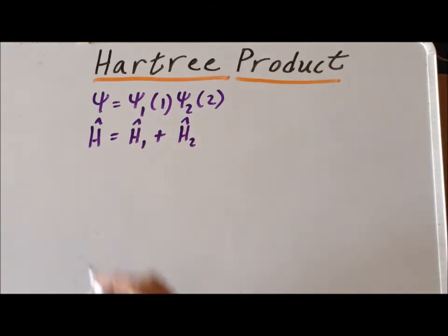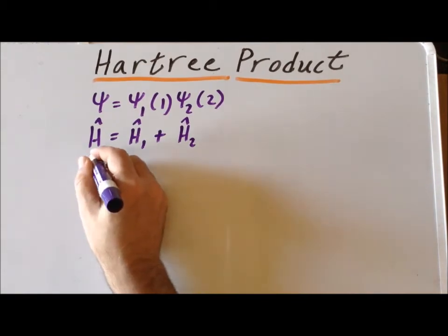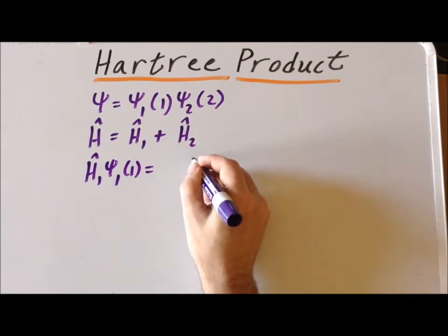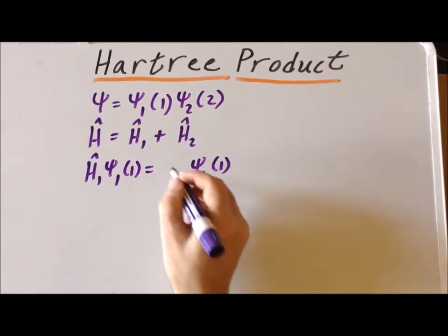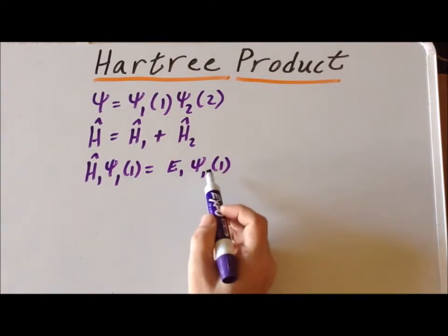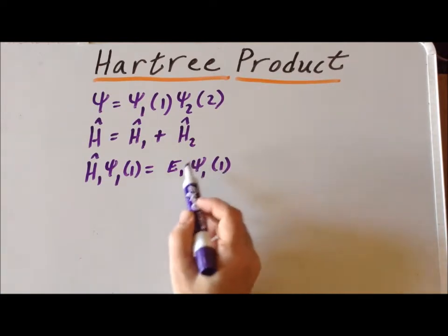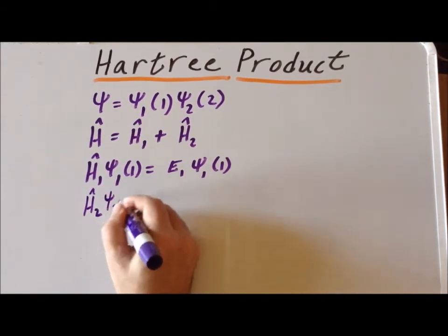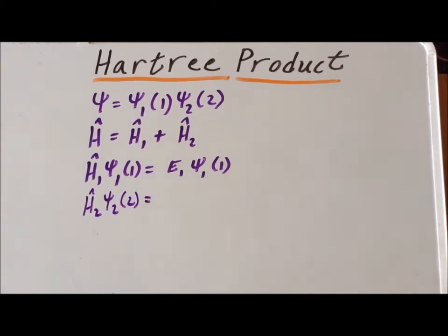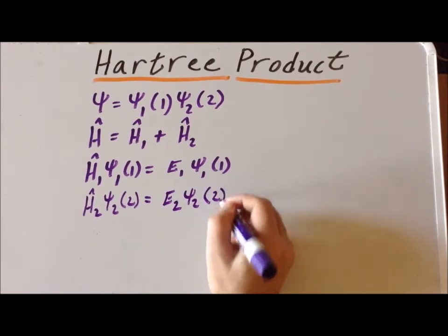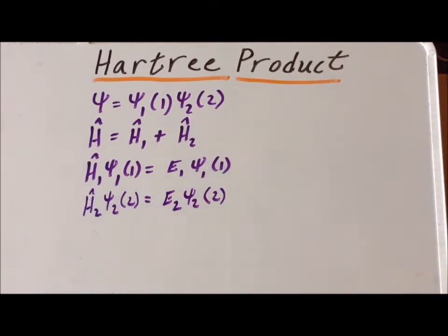Now, it turns out that operator 1 acts on wave function number 1 to give wave function number 1 back, ψ₁, times an energy, E₁, where E₁ is the energy of the first electron in the ψ₁ state. Similarly, we see that ψ₂ of 2 is an eigenfunction of the operator Ĥ₂, and this is merely the definition of an eigenfunction.